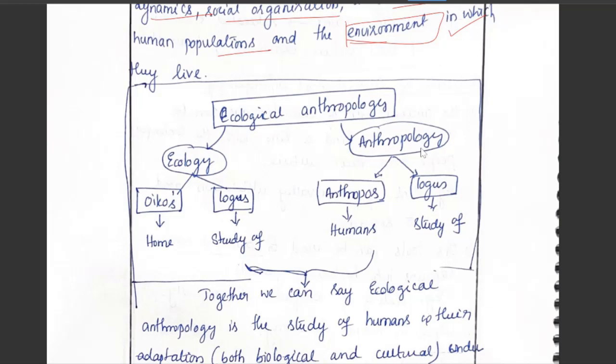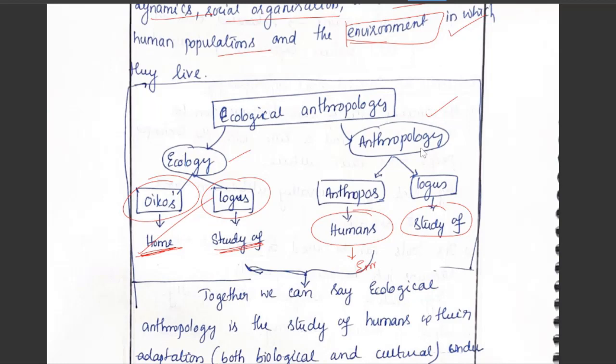It brings together two streams. First is ecology, which comes from 'oikos' and 'logos' — oikos means home and logos means study of. The second stream is anthropology, which means the science or study of humans. So literally, ecological anthropology is the study of humans' home, meaning we are looking at the environment of humans.